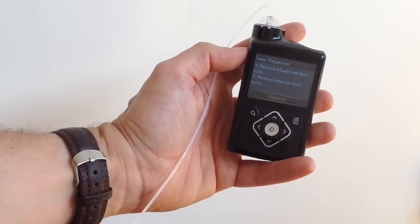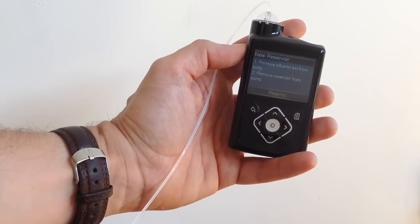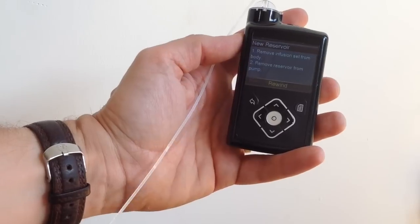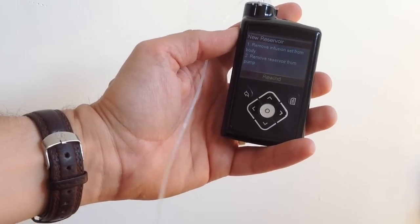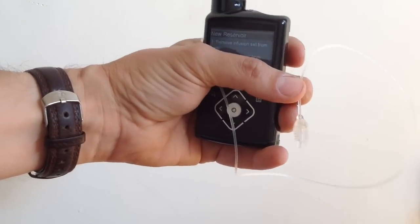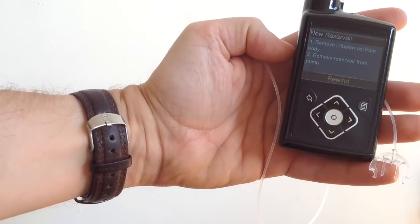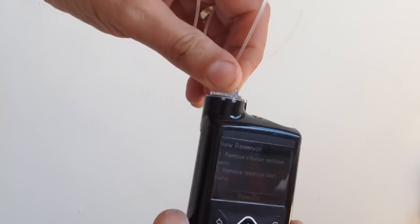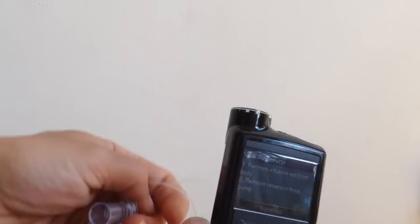And then it just gives you this little piece of text to remind you what to do. So first of all, you remove the infusion set from the body, you disconnect that, and there we are, there's the end. And then you remove the reservoir from the pump, which just slots at the top there.